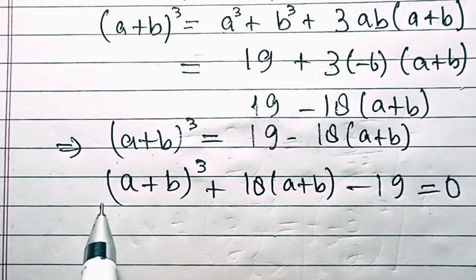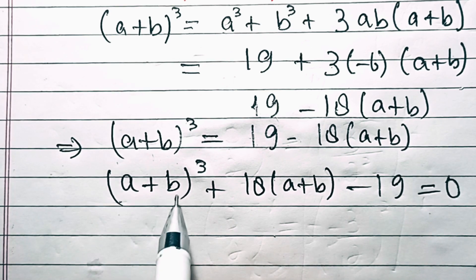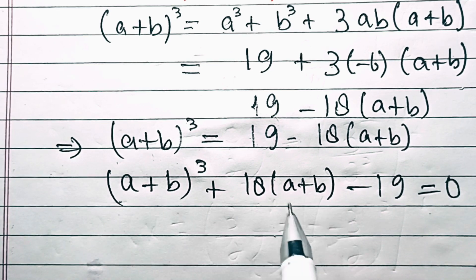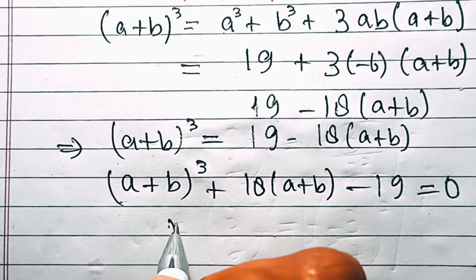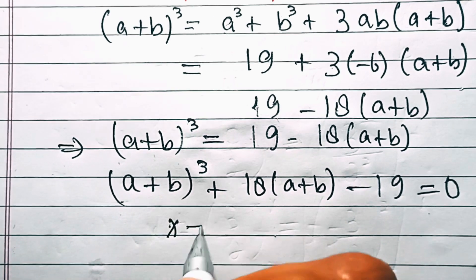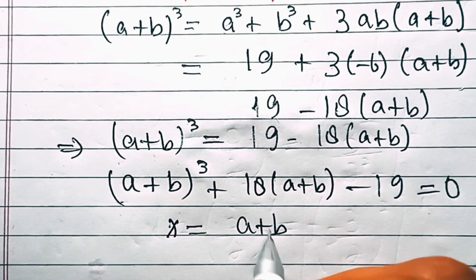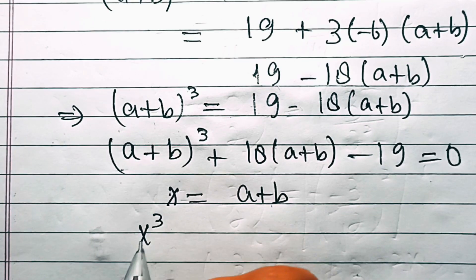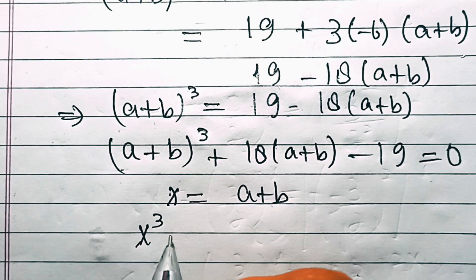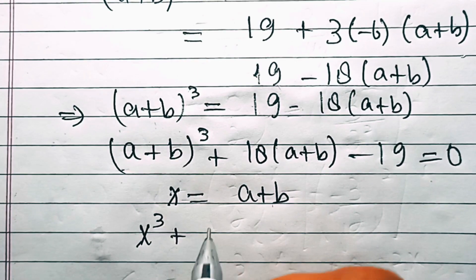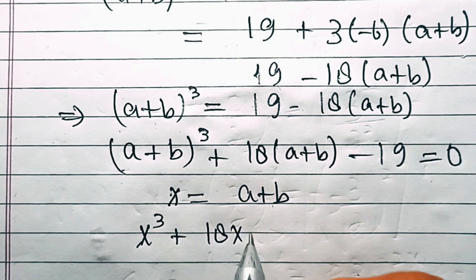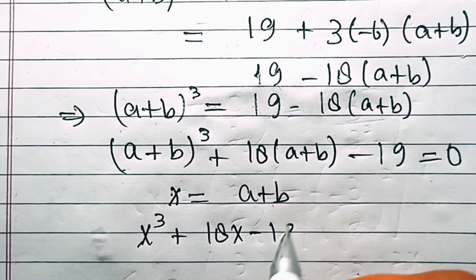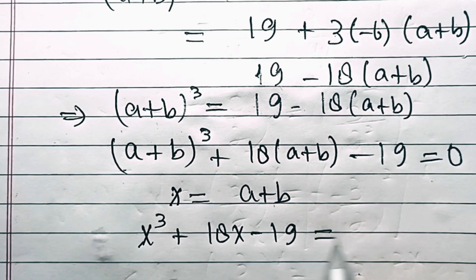Now in the next step, we will let x equal to (a+b). So this equation becomes x³ + 18x minus 19 equals 0.